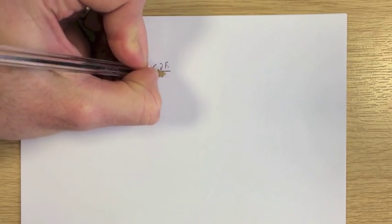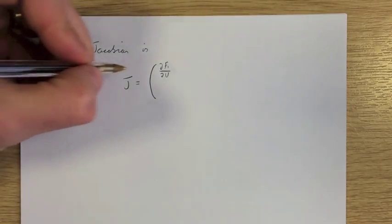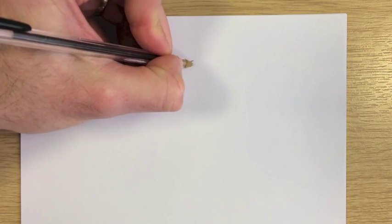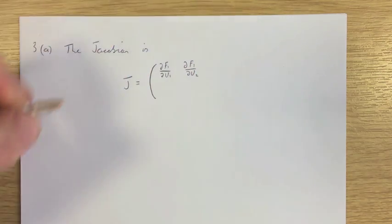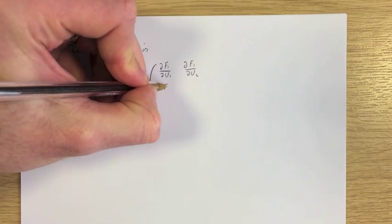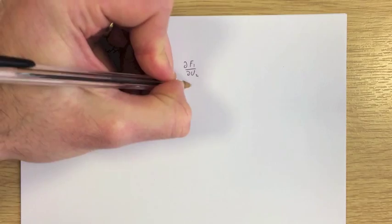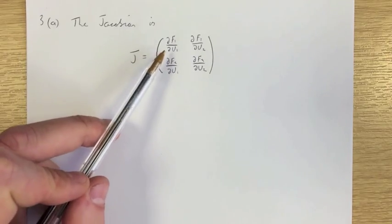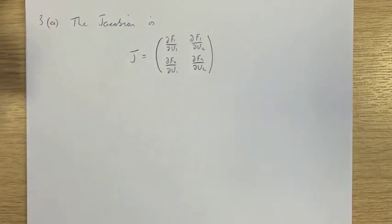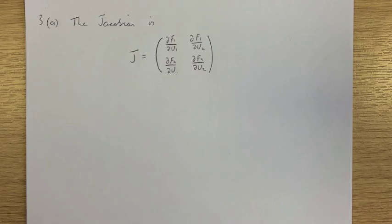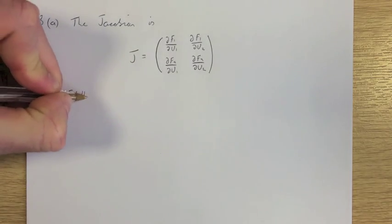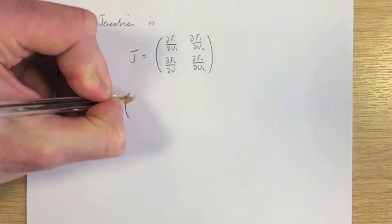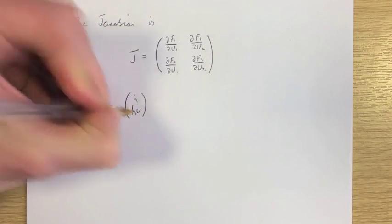The Jacobian is a 2×2 matrix. We have the partial derivative of F1 with respect to U1, the partial derivative of F1 with respect to U2, the partial derivative of F2 with respect to U1, and the partial derivative of F2 with respect to U2. This is something I'd advise you to memorise. From the shallow water equations, the U vector is H and HU — these are our conserved variables.